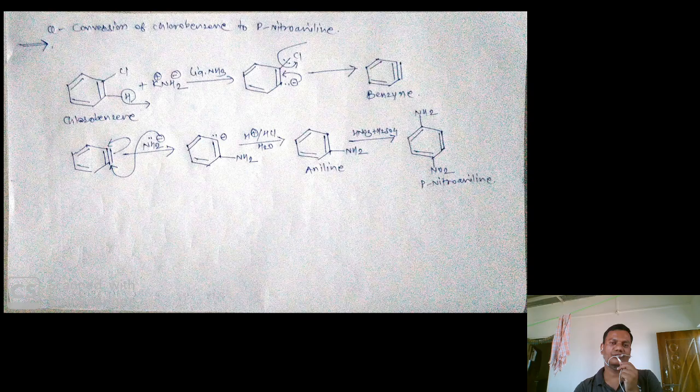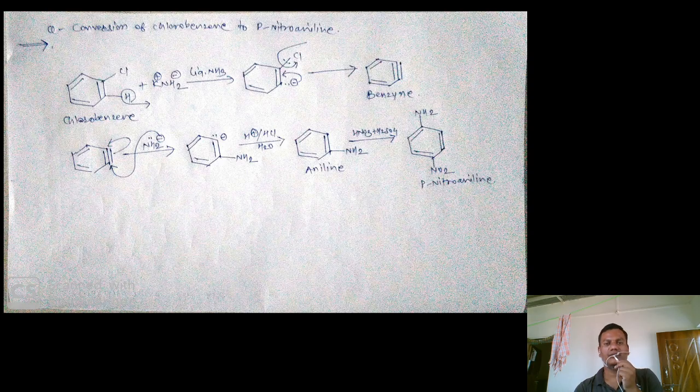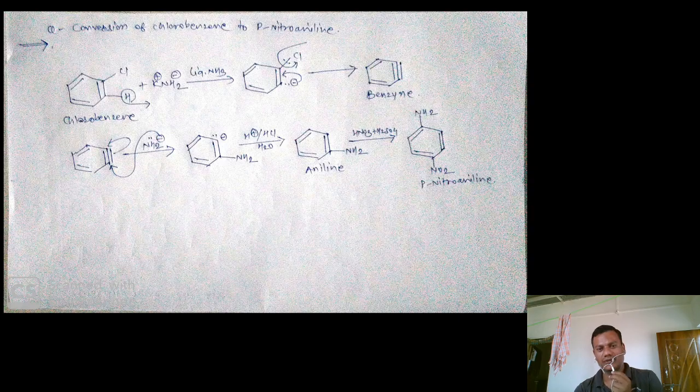Because NH2 is an electron-donating group, it activates the ortho and para positions of the benzene ring, leading to p-nitroaniline formation. Thank you.